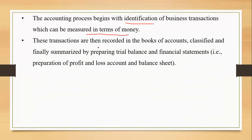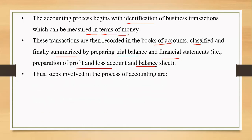After identification, transactions are recorded in the books of accounts — it may be the journal or the subsidiary books as the case may be. Then we need to classify and finally summarize. Summarization is done with the help of the trial balance and the financial statements, which include the trading and P&L account and the balance sheet.